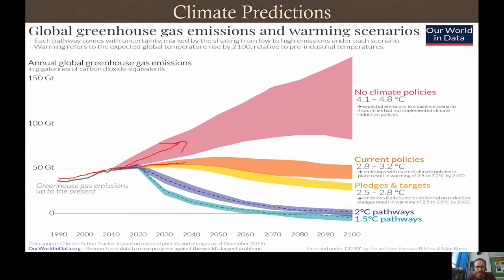We're still going to burn more and more over time — that's kind of our current path. In 2020, there was a little dip in emissions because of the pandemic: fewer people driving, fewer flying. But in 2021 things picked up again, so we're not really reducing pollution much. Ideally, if all countries did what they pledged, we'd be on the yellow path. If we got really serious, we could significantly reduce CO2 and methane in the atmosphere.